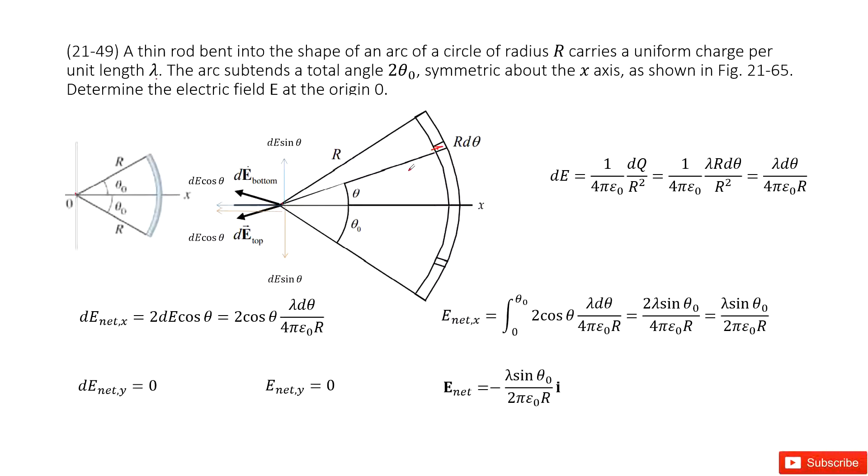Therefore, we can write the magnitude of the electric field for this small fraction as dE. It can be written as 1 divided by 4 pi epsilon naught, constant, times dq divided by r squared. dq is the charge for this small fraction. We can consider it as density times the length. So linear density is lambda times the length r d theta.